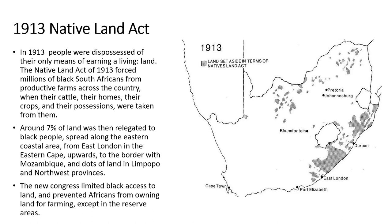Prior to this act, most of these black farmers were tenants on white farms, plowing a portion of land given to them and giving up to 50% of the harvest to the landlords to pay for their tenancy. Under the act, this was prohibited — they could no longer hire or buy land. The landlord-tenant relationship was now a criminal offense in South Africa, for which farmers could be fined a hundred pounds, which was a considerable amount in those days. The black tenants would then be given the option to become the farmer's paid servants or leave the farm.